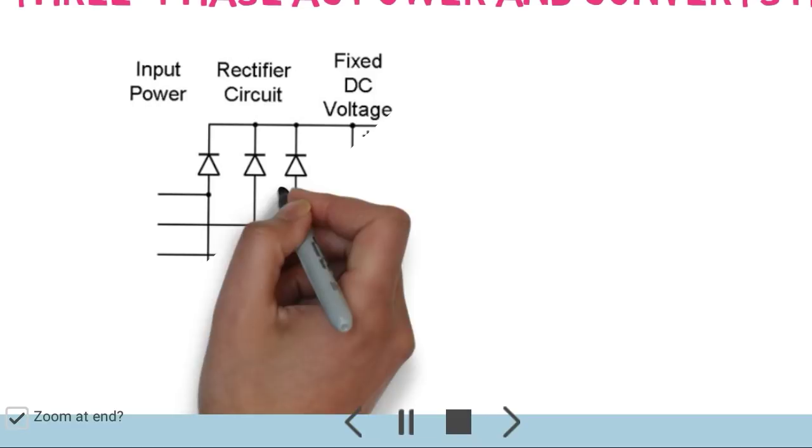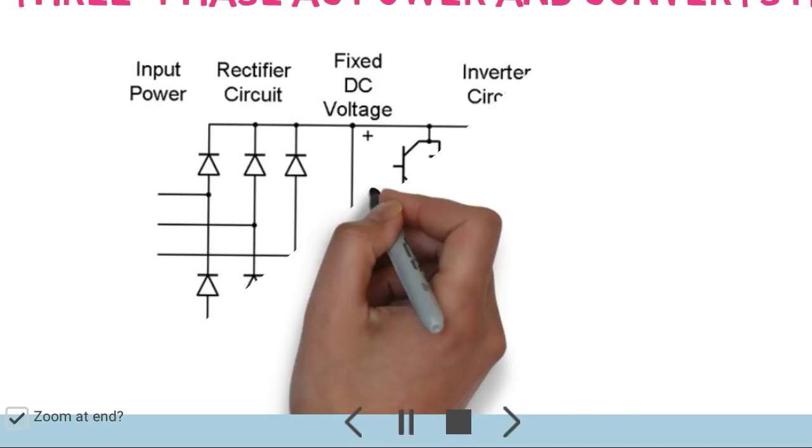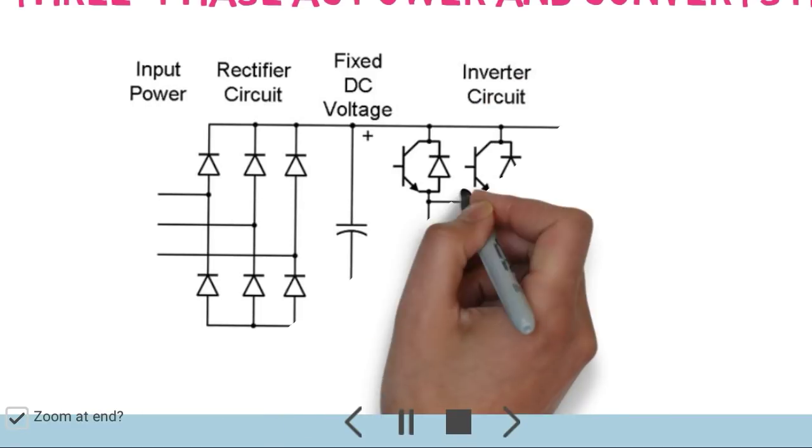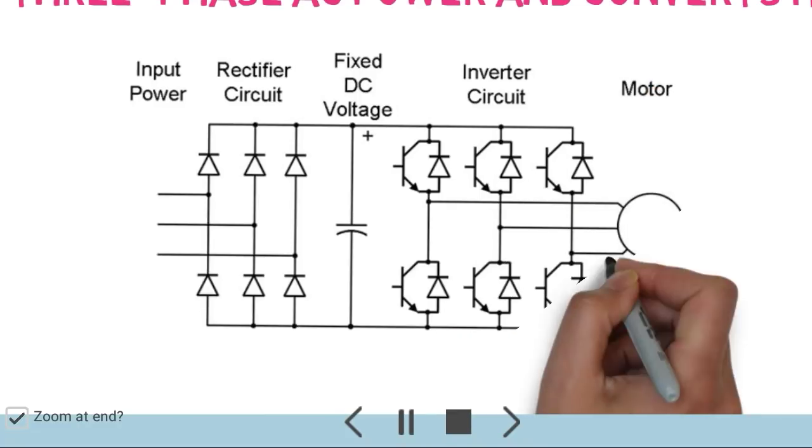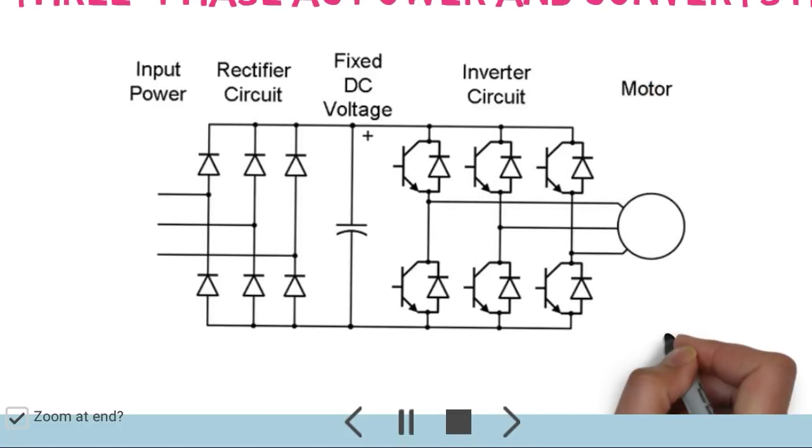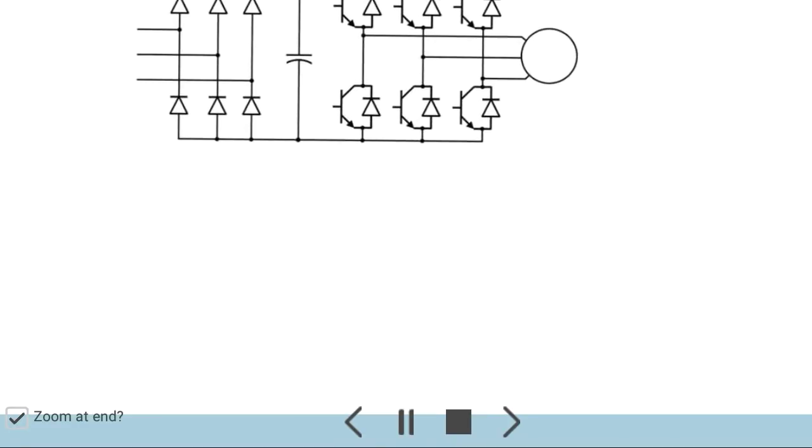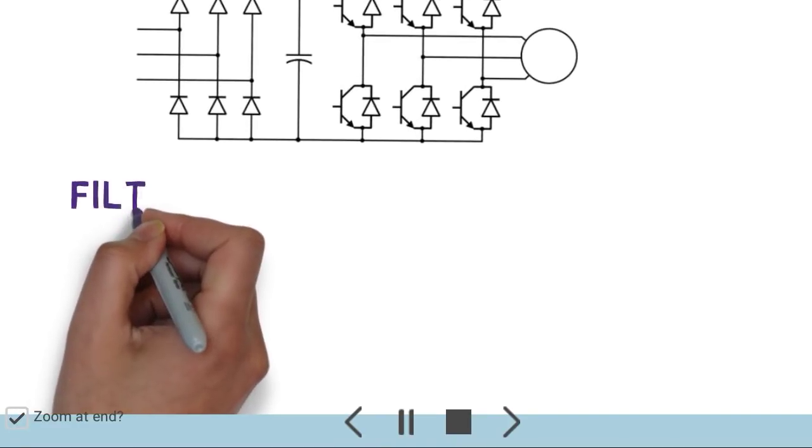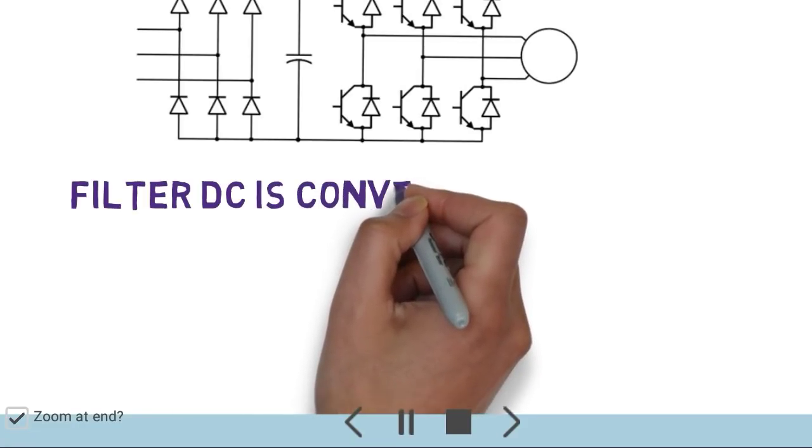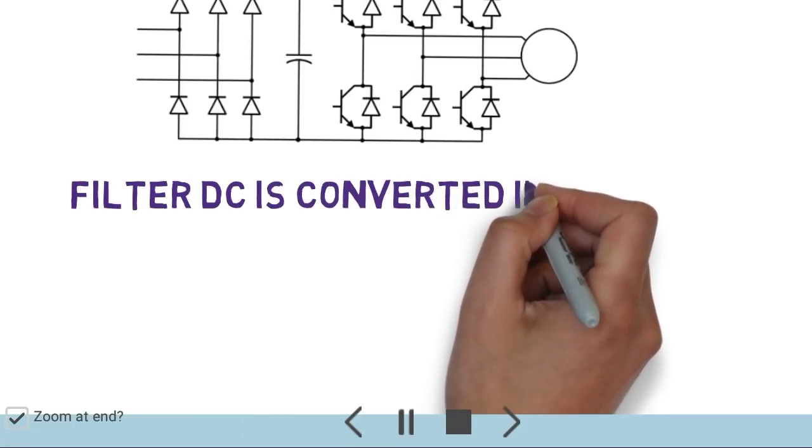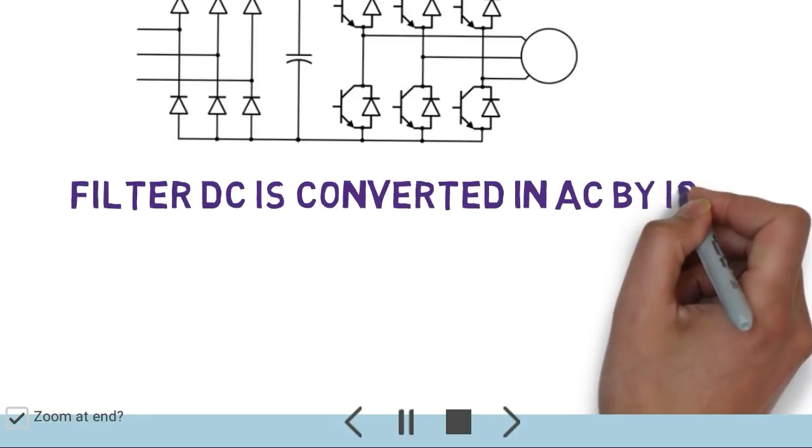First is input power supply, three-phase. Then there is a six-number rectifier, fixed DC voltage, and then inverter circuit which converts filtered DC into AC by IGBT.